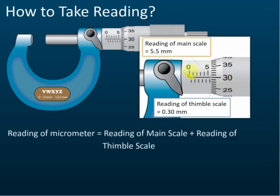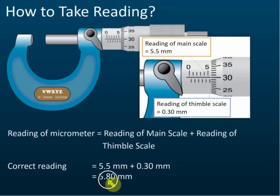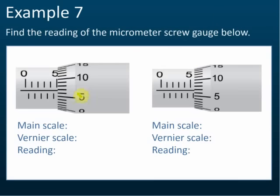So with the main scale reading of 5.5mm and the thimble scale reading of 0.30mm, the correct total reading is 5.5 plus 0.3, which equals 5.8mm. That is how we take a reading from the micrometer.